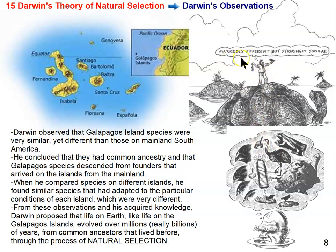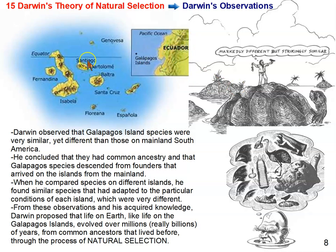The cartoon says 'markedly different, but strikingly similar,' referring to the species that Darwin found on the Galapagos Islands that were similar to the mainland species of South America but somewhat different, because they had adapted to the islands.